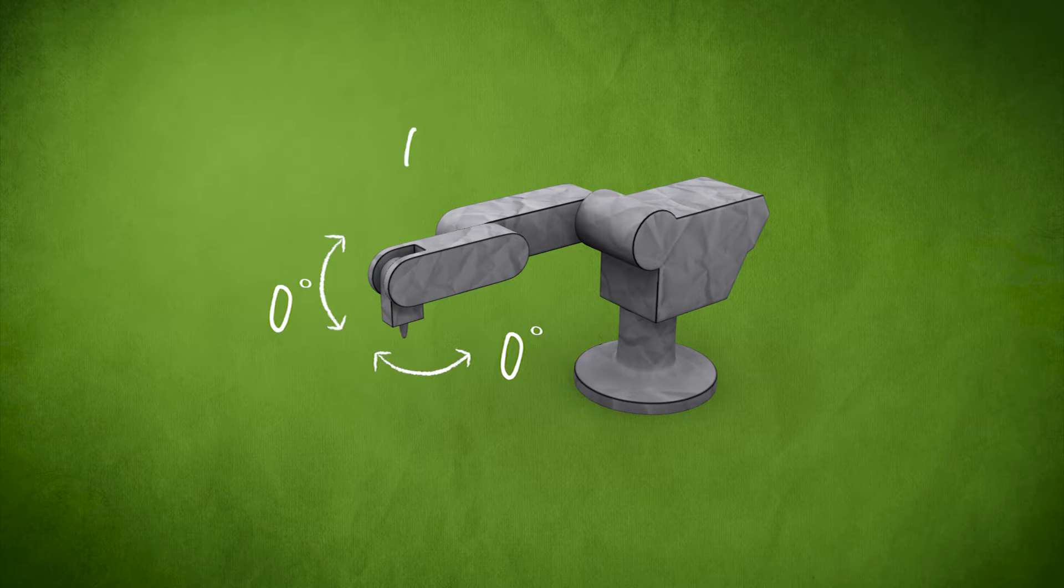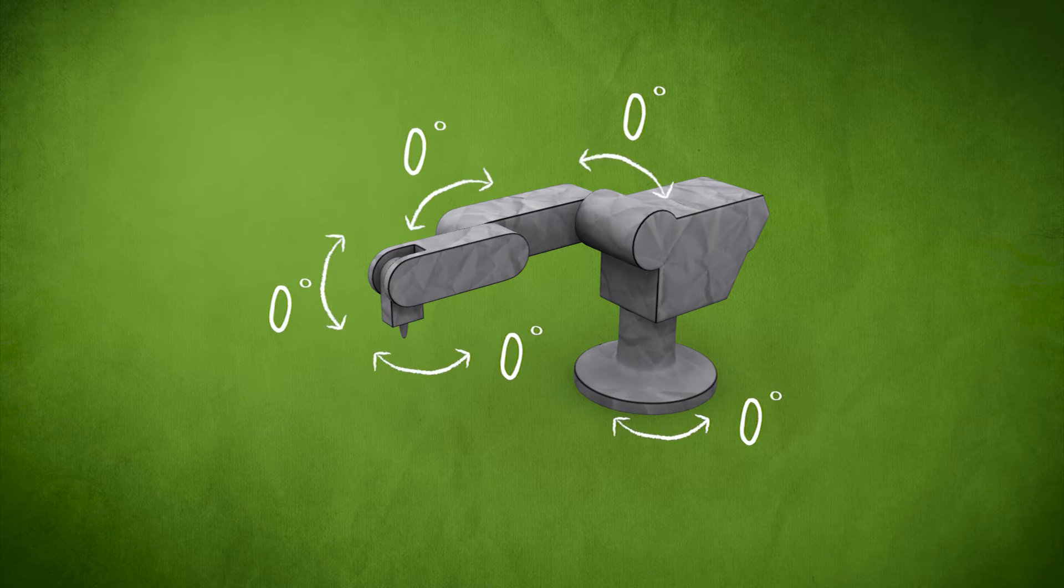Right now, this robot arm is in its zero pose, its default position in which all joint angles are set to zero.